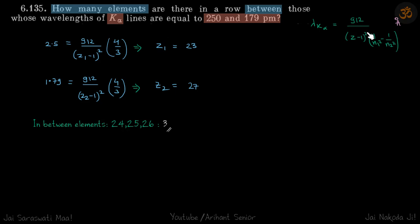So we are talking about k-alpha lines. Using Moseley's law, we will replace z by z minus 1, because we are talking about k-alpha line.